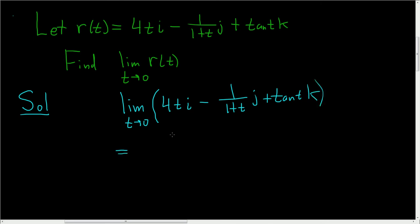At this point it looks like we can evaluate each of the components at 0. So we end up with 4 times 0i, then here we get minus 1 over 1 plus 0j, plus the tangent of 0k.